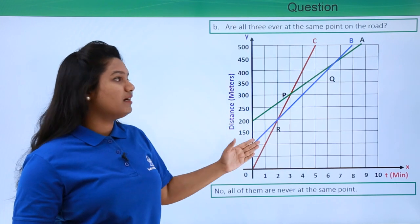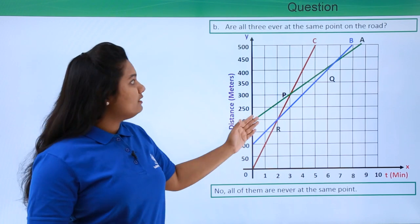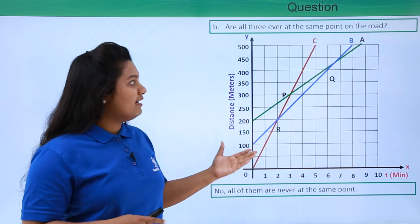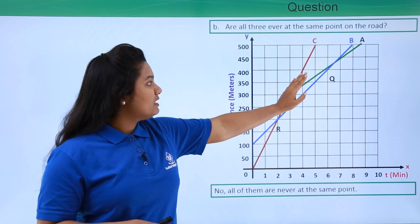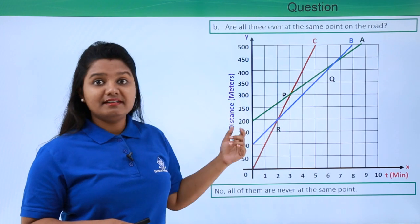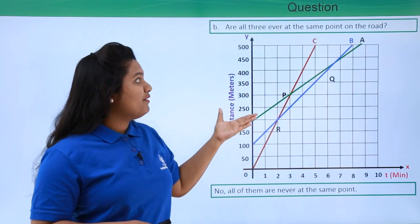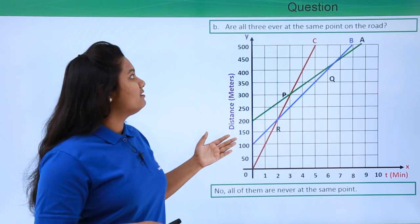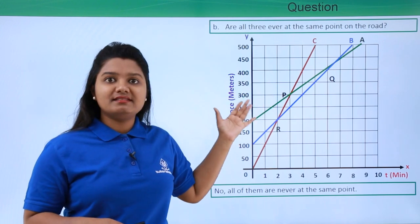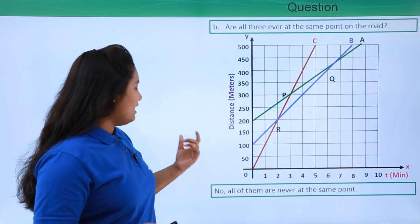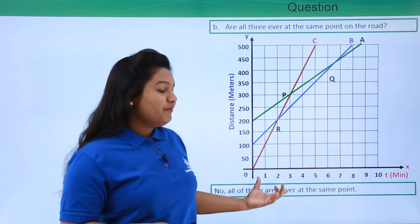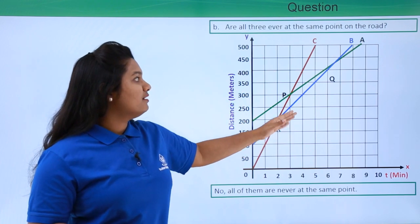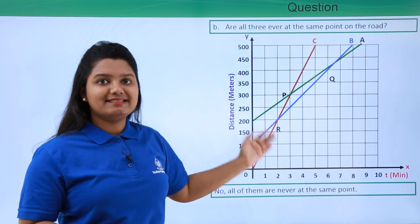However, we do not have any point on this distance-time graph where all three lines coincide or meet each other. Thus the answer is no — all three are never at the same point on the road, since there is no common point of intersection of all three distance-time graphs.